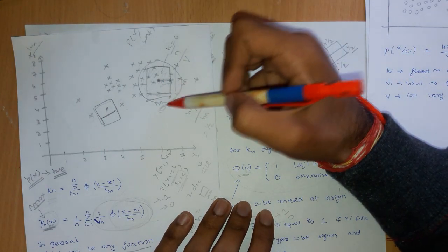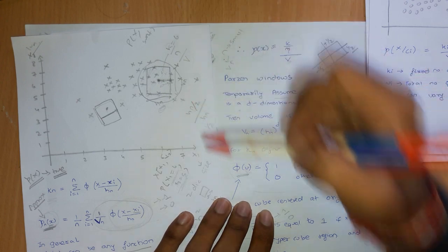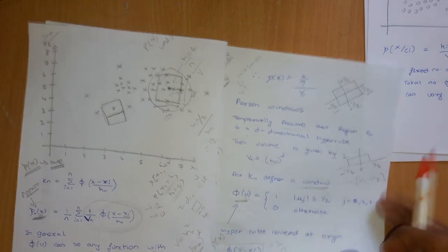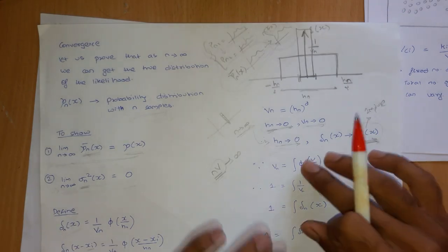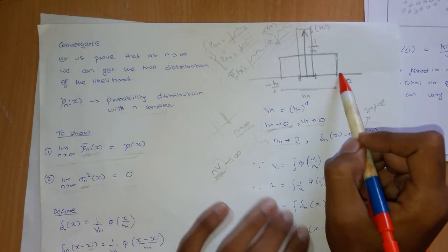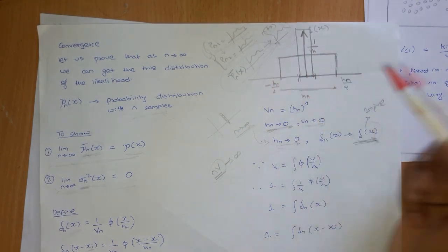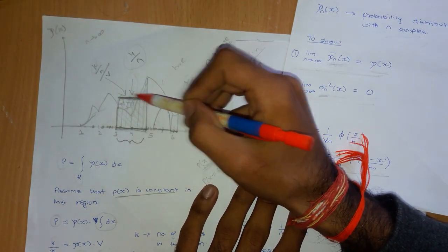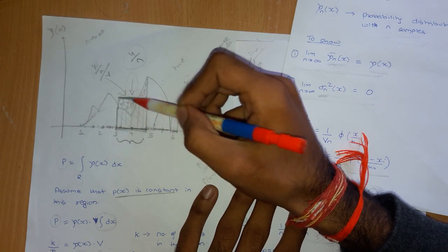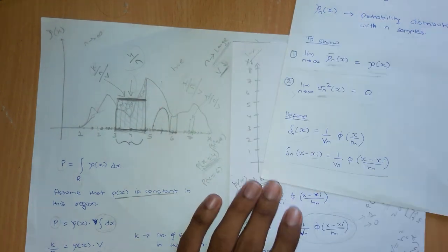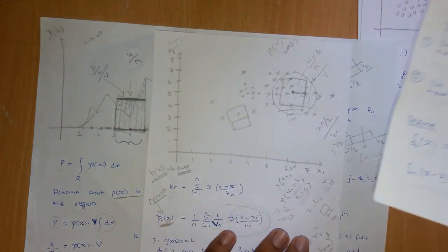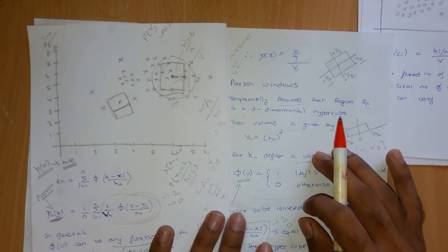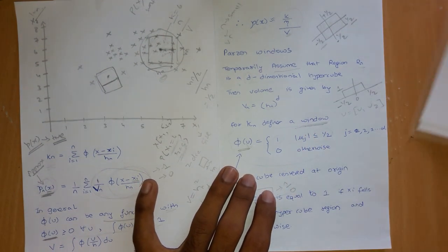On the other hand, if we take a very large value of h_n, as shown in the convergence proof, this will get convolved with the true distribution and we will lose the sharp variations of the true distribution. So defining h is overall a problem faced in the Parzen window technique.